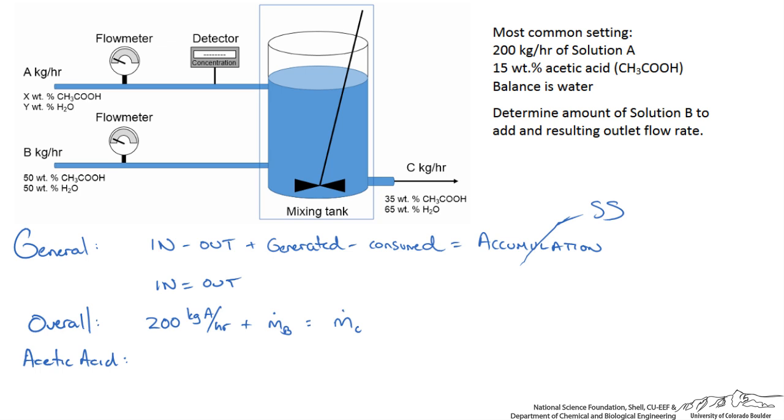For our acetic acid balance we start with stream A. We are told that we have 15 weight percent. So I will write 0.15 kg of acetic acid per kg of our solution, multiplied by our flow rate of 200 kg per hour.